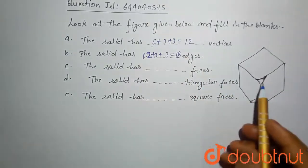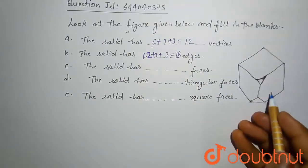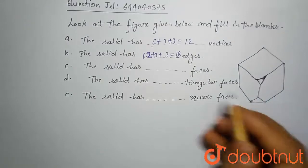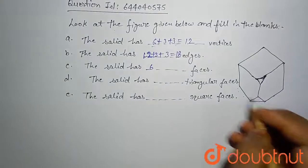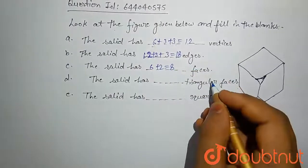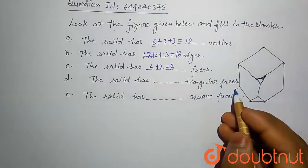Then solid has faces. If you have total six faces, but here two faces are triangular faces, then total faces is eight. The solid has triangular faces.